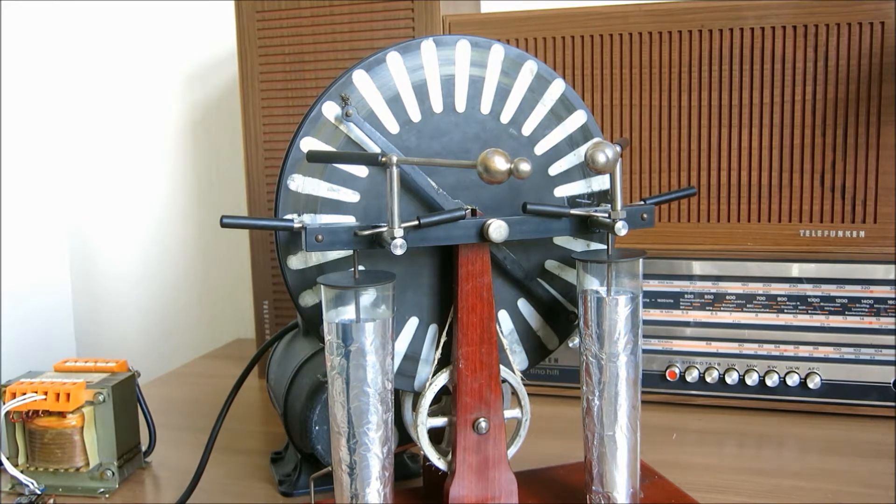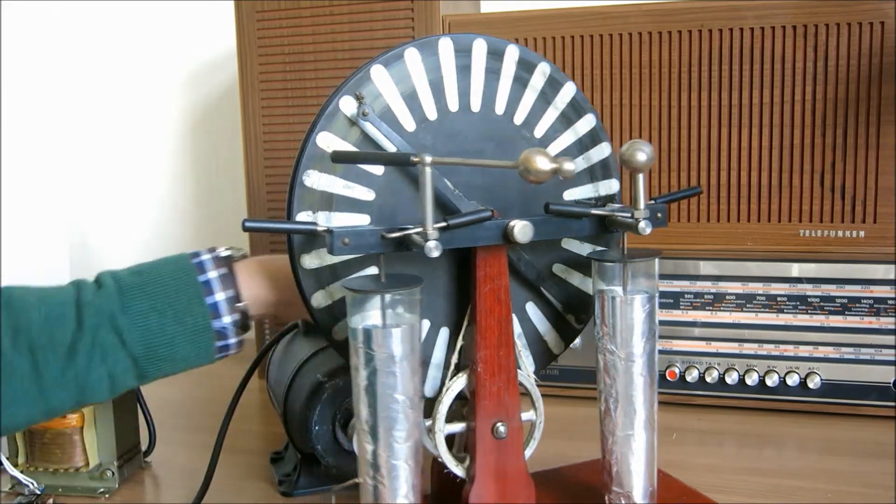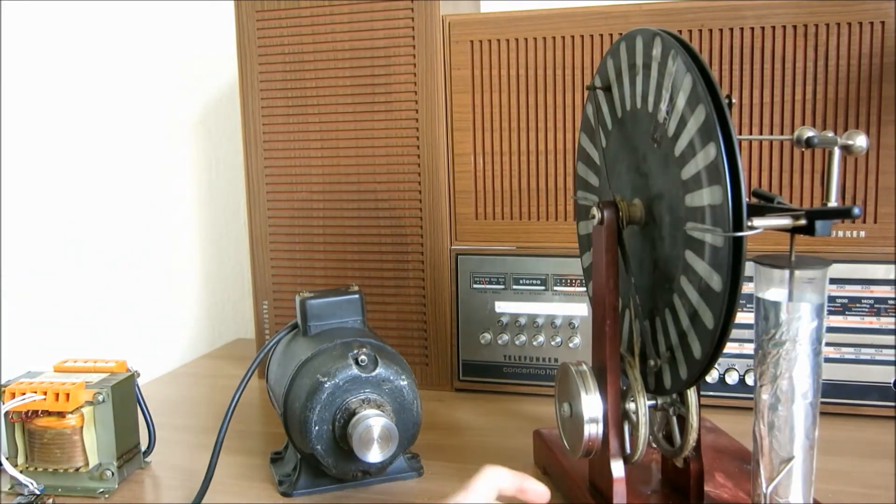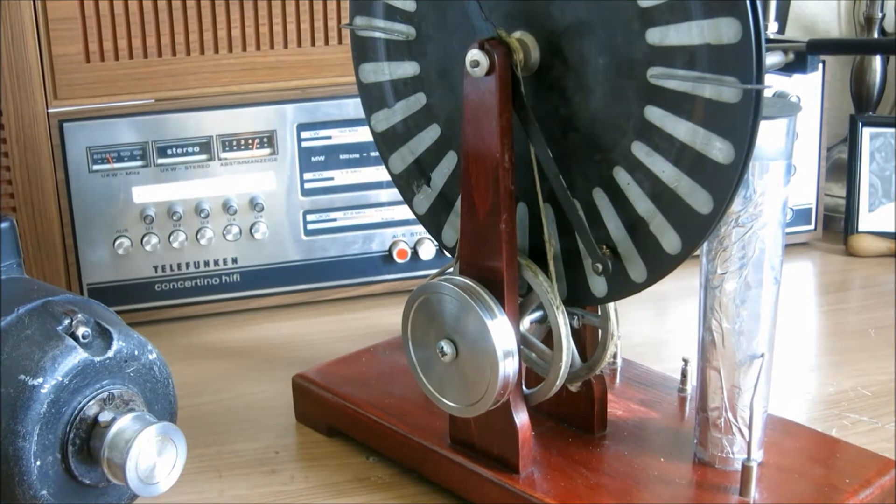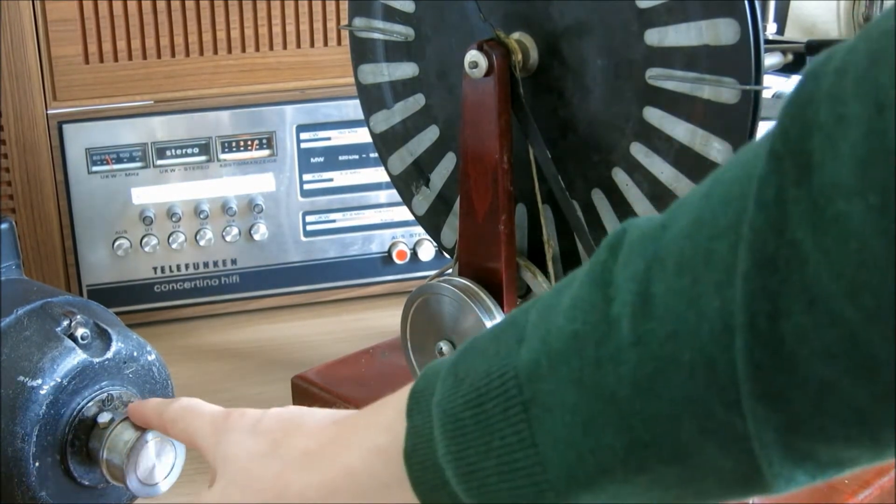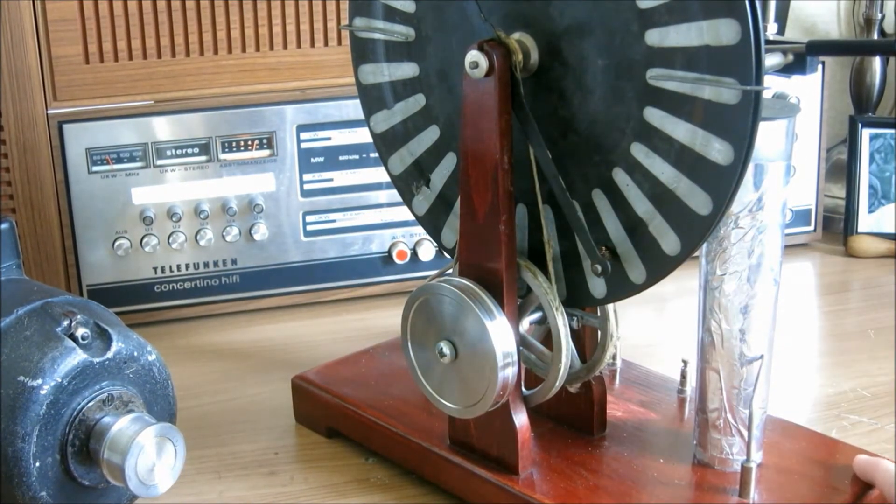First of all what I did was machine a pulley for it, which is this thing on the side. This pulley allows me to connect the electric motor and the Wimshurst machine.